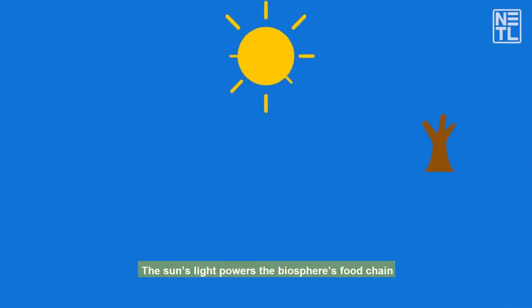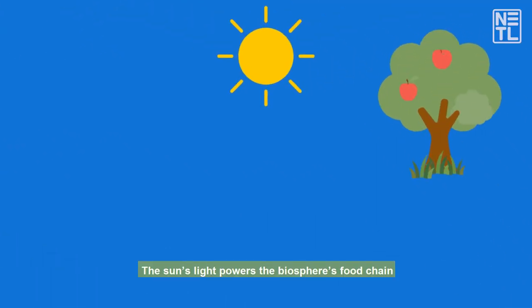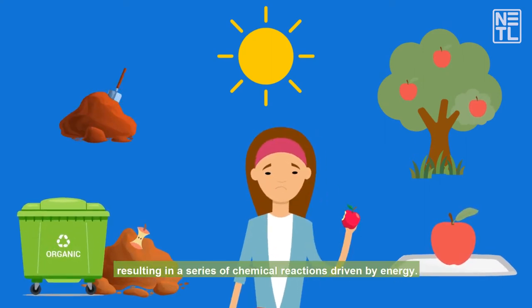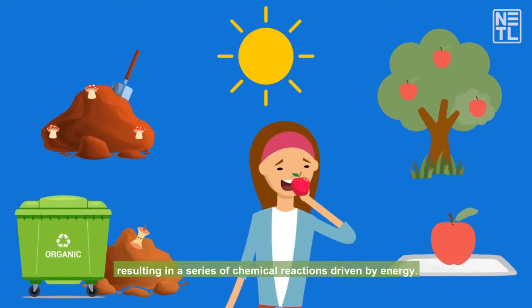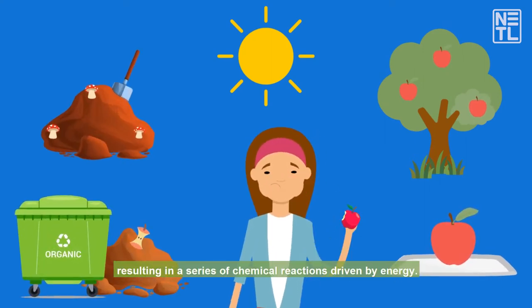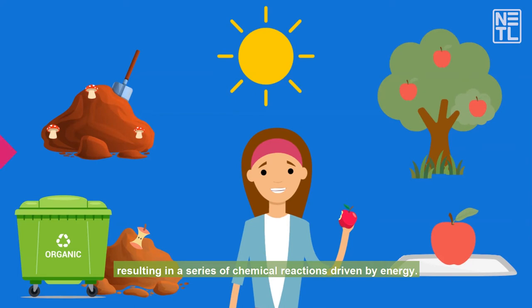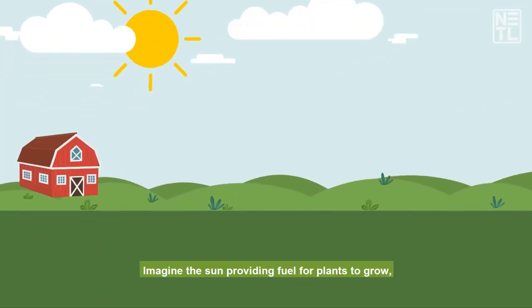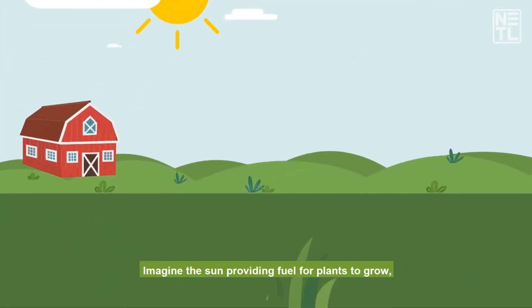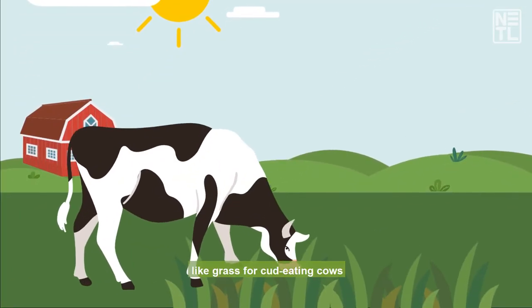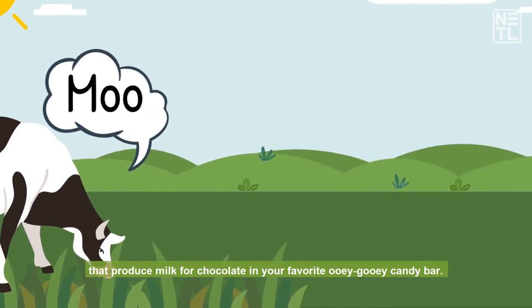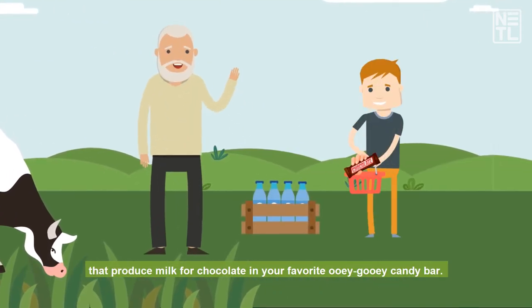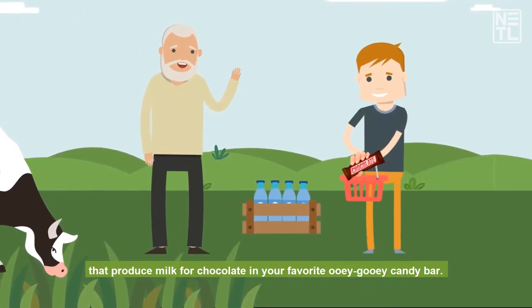The Sun's light powers the biosphere's food chain, resulting in a series of chemical reactions driven by energy. Imagine the Sun providing fuel for plants to grow, like grass for cud-eating cows that produce milk for chocolate and your favorite ooey gooey candy bar.